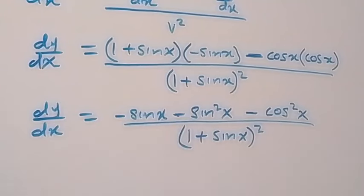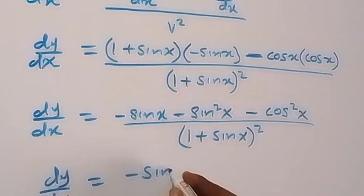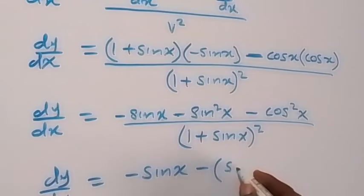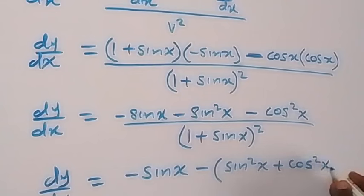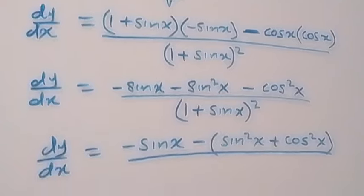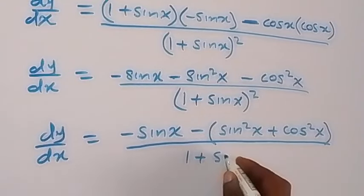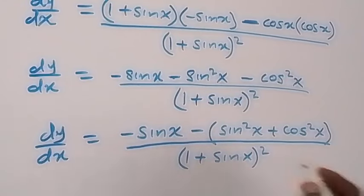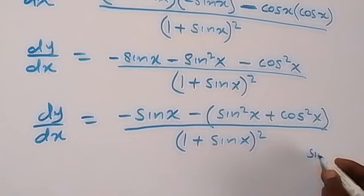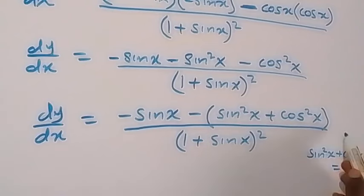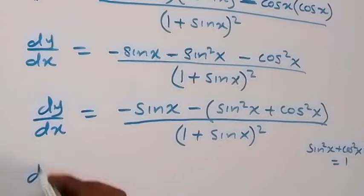We can factor minus out, and this will now be written as dy/dx equals minus sin x plus sin squared x plus cos squared x, divided by 1 plus sin x squared. And what's in the bracket here is the same thing as 1, because sin squared x plus cos squared x in trigonometry is the same thing as 1.